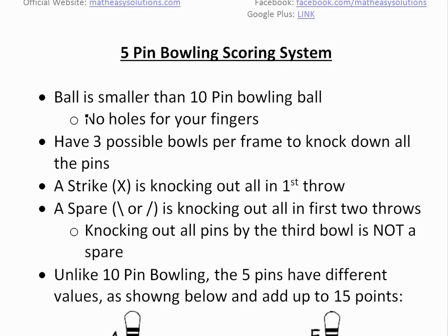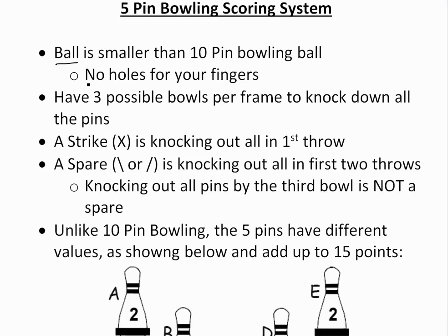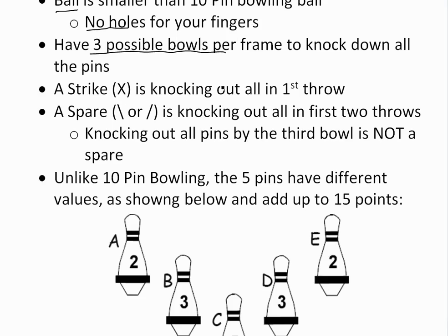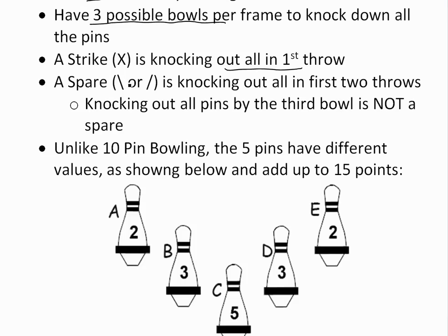In 5-pin bowling, the ball is smaller than in 10-pin bowling and there are no holes for your fingers. You have 3 possible bowls per frame to knock down all the pins, versus 2 bowls per frame in 10-pin bowling. A strike (X) is knocking out all pins on the first throw, or a spare — it doesn't matter which side notation you use.